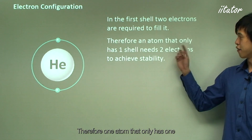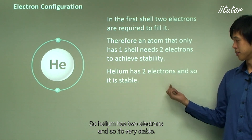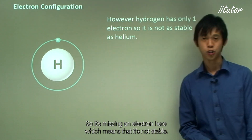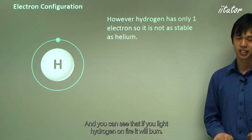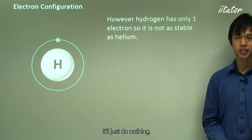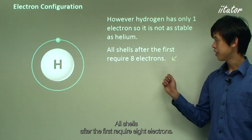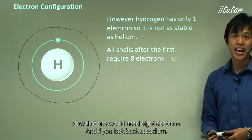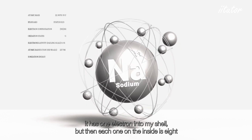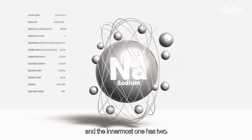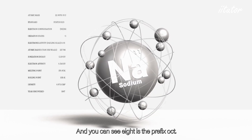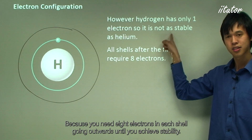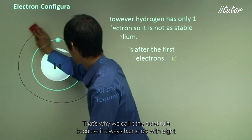Hydrogen has only one electron, so it's not as stable as helium — it's missing an electron. If you light hydrogen on fire it will burn, but helium won't react at all. All shells after the first require eight electrons. Looking at sodium, its outermost shell has one electron, each inner shell has eight, and the innermost has two. Eight is the prefix 'oct,' which is why it's called the octet rule — you need eight electrons in each shell going outward until stability is achieved.